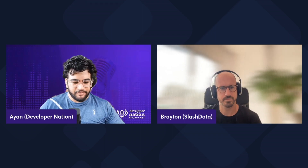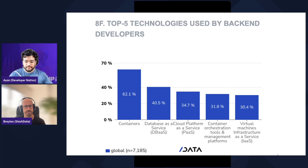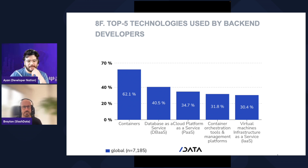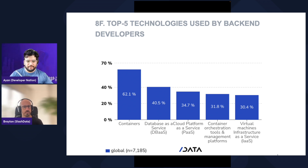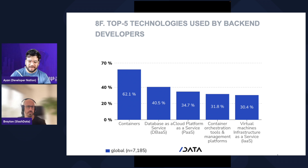This first graph shows the top technologies used by backend developers. This is really exciting because it includes containers, cloud platforms, and virtual machines. At any given time, a backend developer will be using a combination of many of the technologies mentioned here. And we've seen a rapid shift toward containers, thanks in large part to microservice architecture.